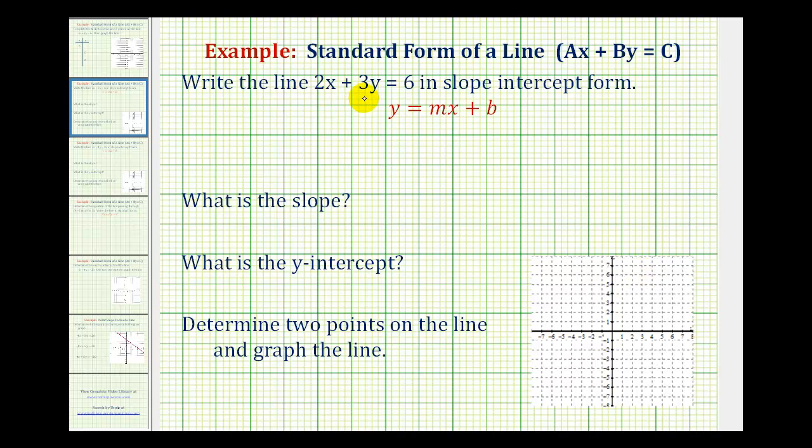We want to write the linear equation 2x plus 3y equals 6 in slope-intercept form. So we're given an equation in standard form, we want to write it in the slope-intercept form of the form y equals mx plus b. Which means we'll have to take this equation 2x plus 3y equals 6 and solve it for y.